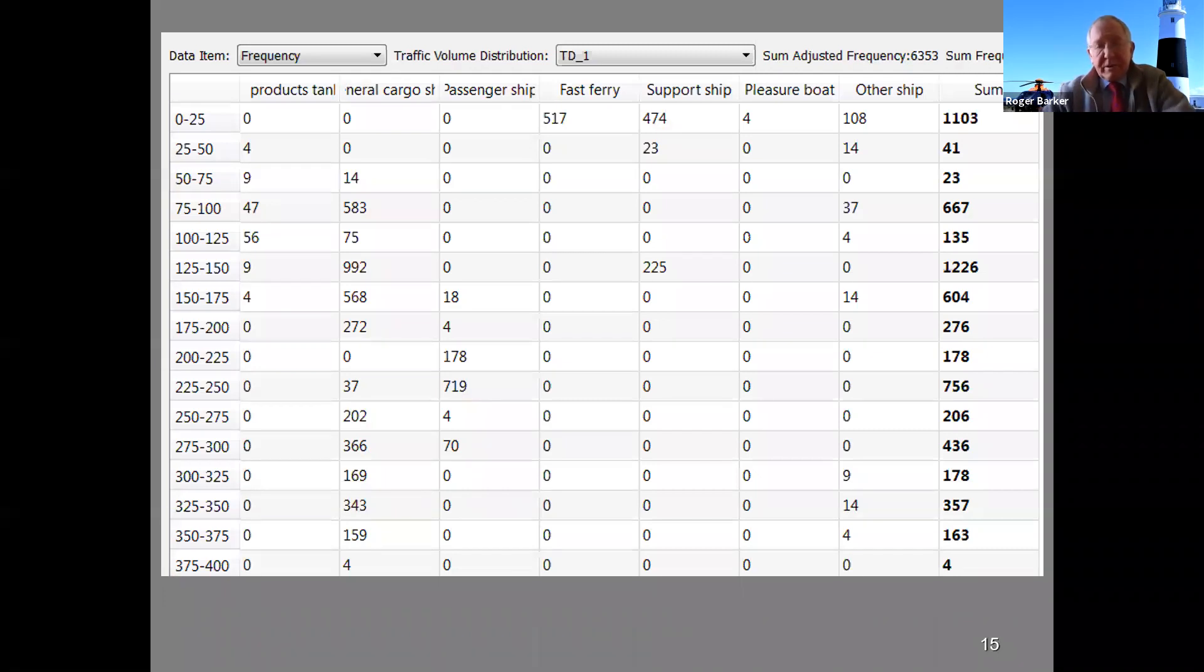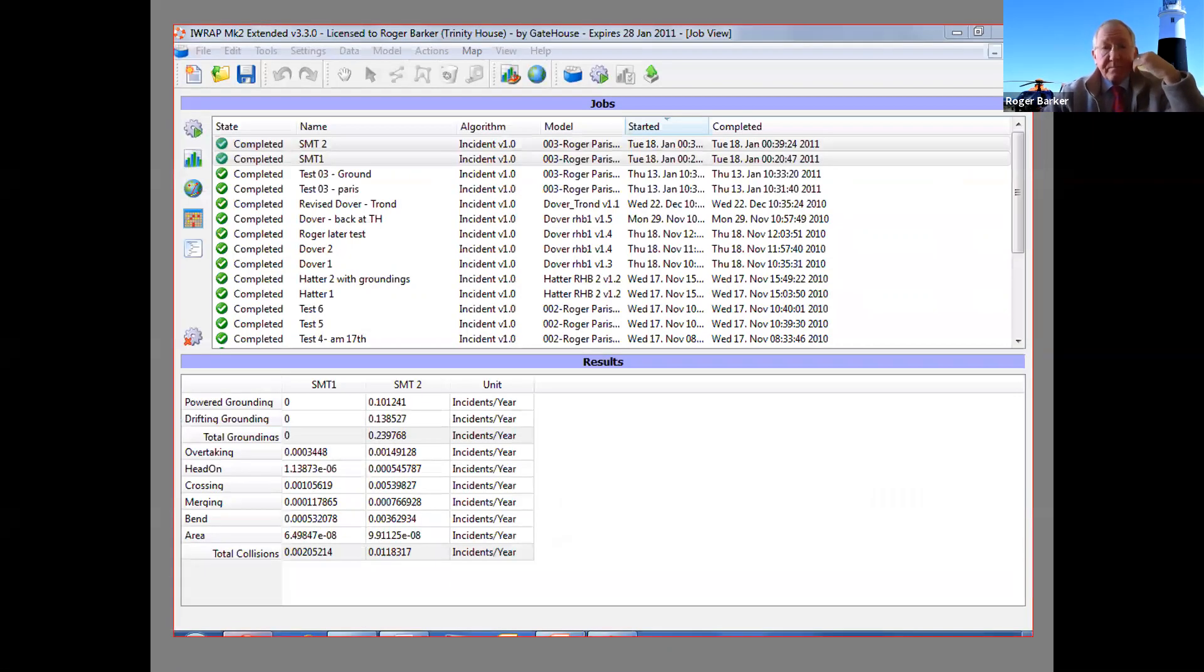Out of the AIS data, a table is developed automatically showing the vessels involved. And that record is essential. Having created the model within IRAP, you can make changes to routing measures or improve aids to navigation, which would change the risk. And you can make a comparison between now and then. IRAP can be massively useful.